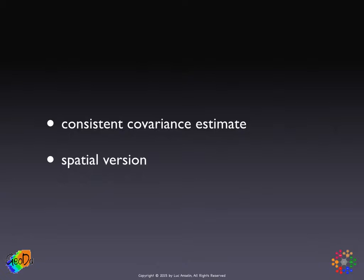The key principle here, which is different from before, is that we don't specify a particular functional form for the spatial autocorrelation, but we let it be generic. Of course, that has consequences, and it won't be as generic as we may think, but it will be very general, and this will allow us to stay with OLS or two-stage least squares estimation. The advantage is that the ordinary least squares estimate is not only consistent, but also unbiased, even in the presence of autocorrelation in the error term. The challenge is how to estimate the variance-covariance matrix for the error term, and that is what we focus on here.